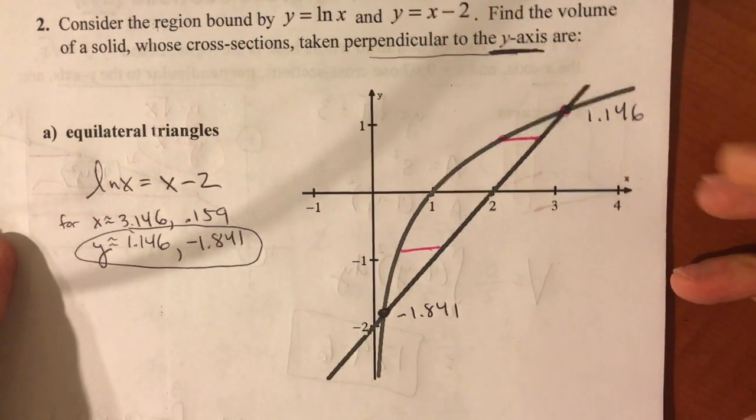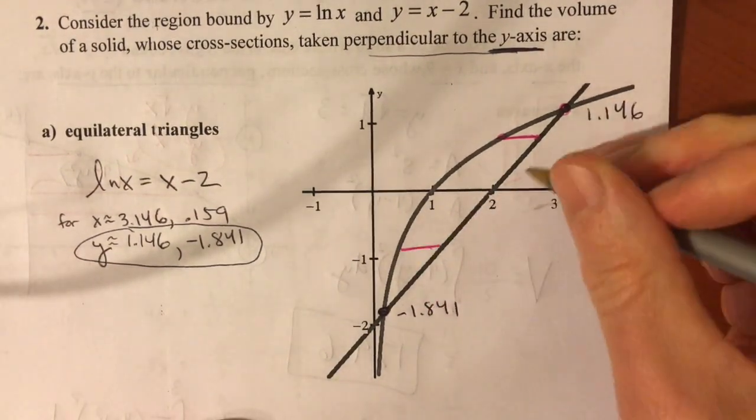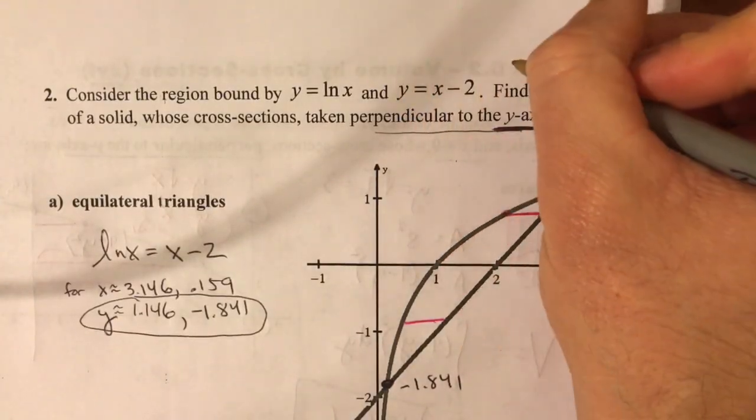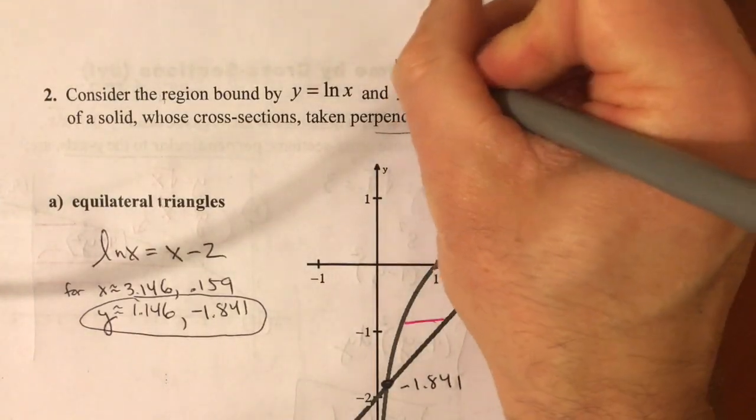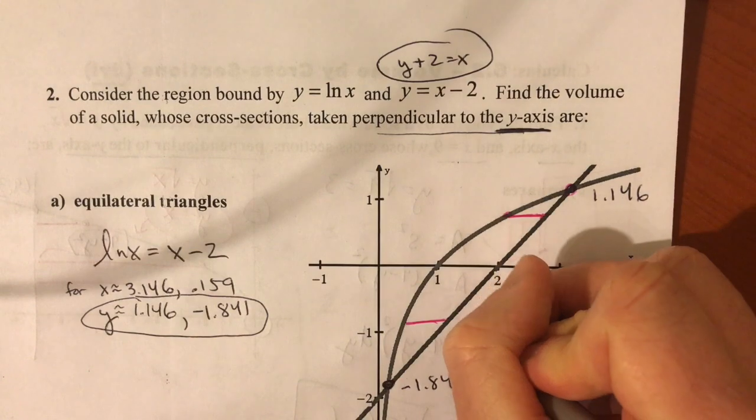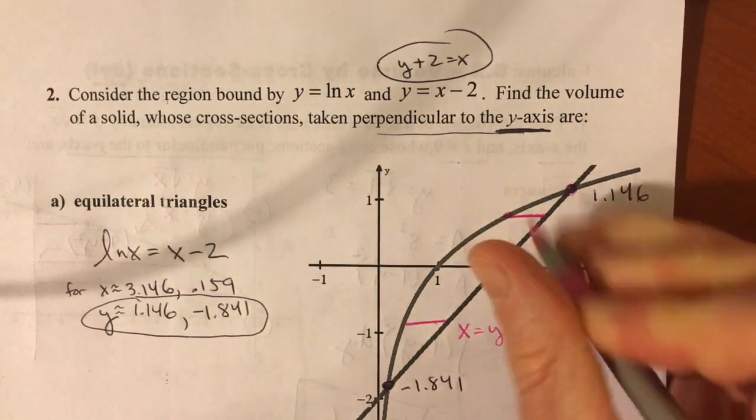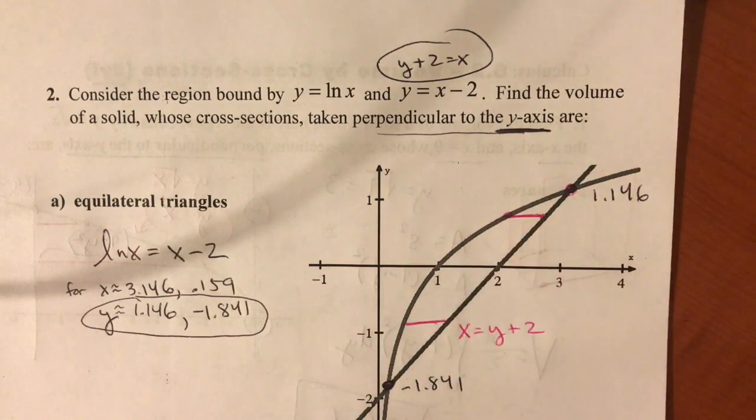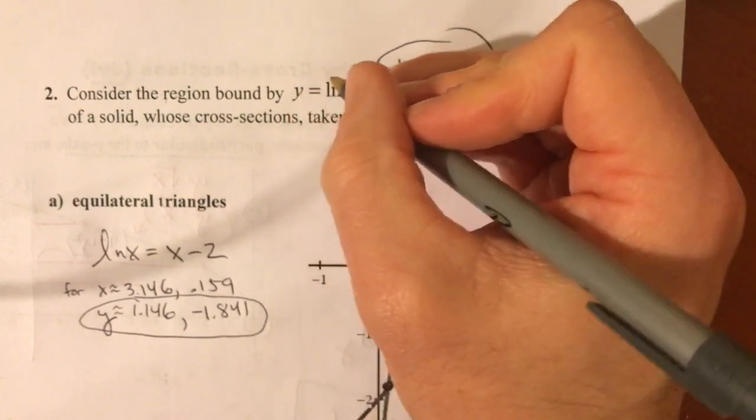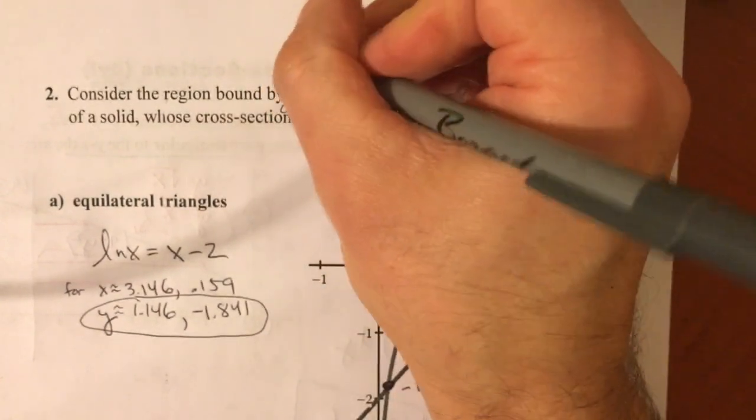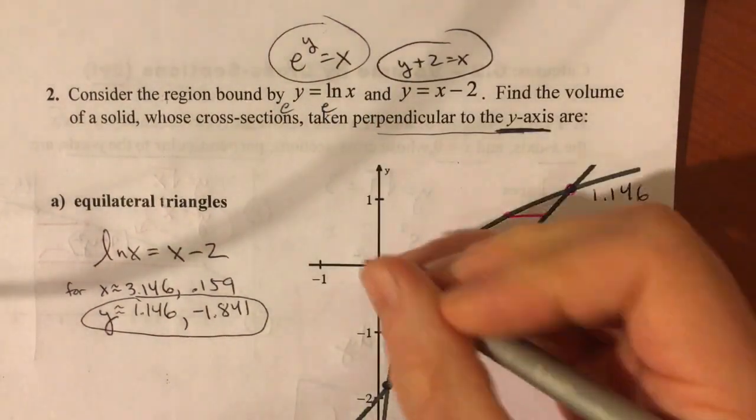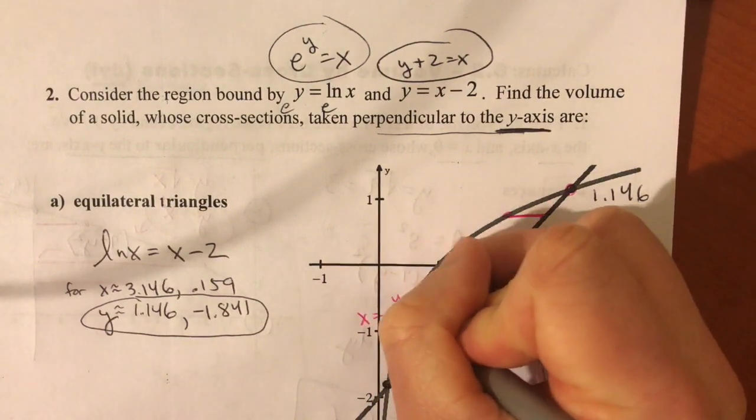And now let's go here. We're doing this in this direction, so we need to solve these equations for x. This one is certainly simple enough. If y equals x minus 2, then that means y plus 2 is equal to x, and that's this line right here. x is equal to y plus 2. This being y equals ln of x, to solve that for x, you want to raise e to each side, right? So that means e to the y is equal to x. And so there's your other equation. x equals e to the y.